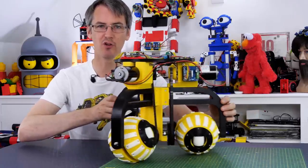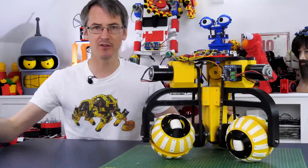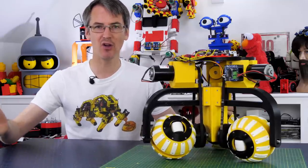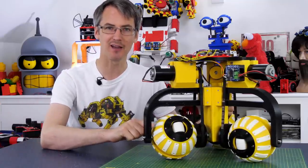Do you remember when I made this omnidirectional robot with ball-shaped wheels that can move in any direction? Well, at the time loads of people said I should make one big enough for me to ride on, so today we're going to make a wheel just like this but much bigger.